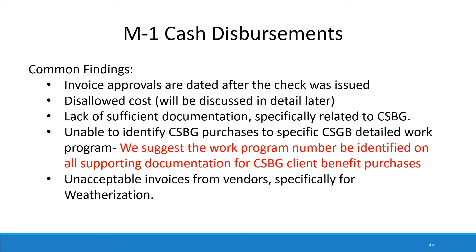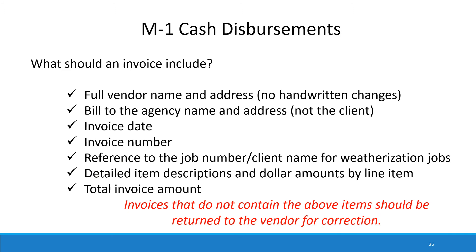We also have some unacceptable invoices from vendors, specifically for weatherization. What we would like to see on all invoices — and this is pretty mandatory — is a full vendor name and address with no handwritten changes, the bill-to agency name and address (not the client), an invoice date and invoice number with reference to the job number and client name for weatherization jobs, detailed item descriptions and dollar amounts by line item, and a total invoice amount. Invoices that don't contain all of these items should be returned to the vendor for correction. Invoices should not be modified; if a simple modification is necessary, write on the invoice the reason it was modified, and the person who modified it should initial and date it.